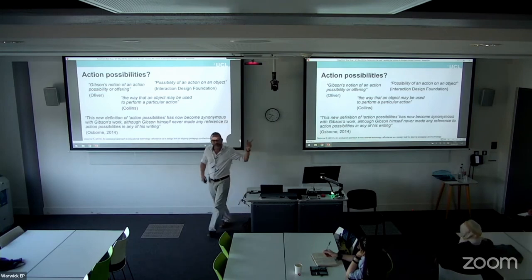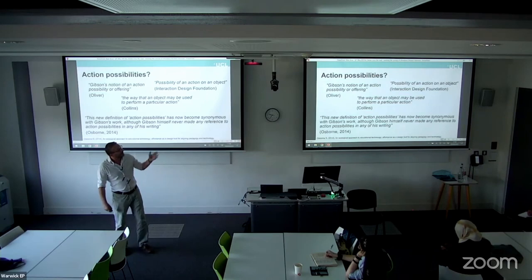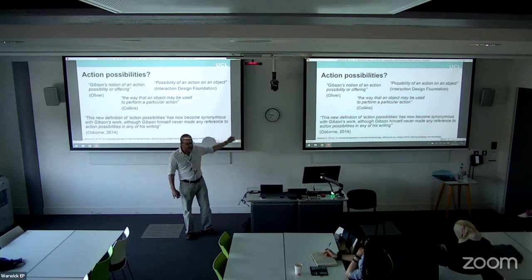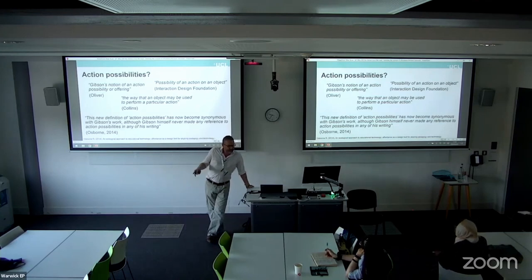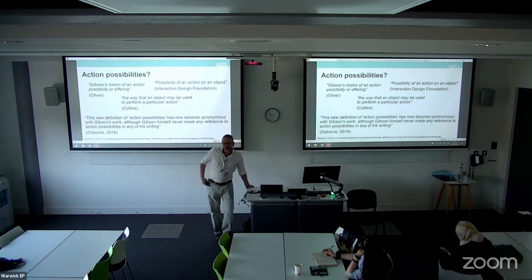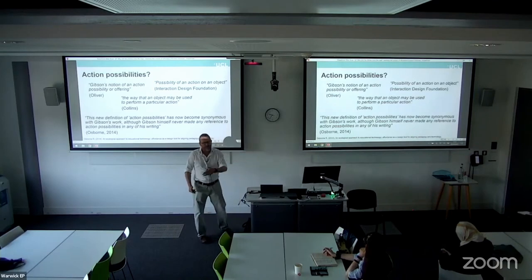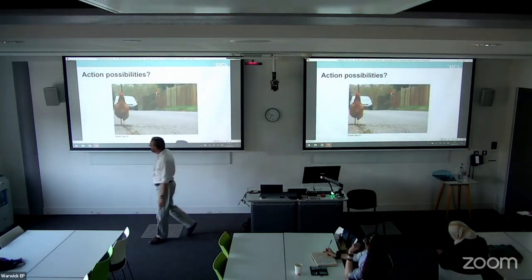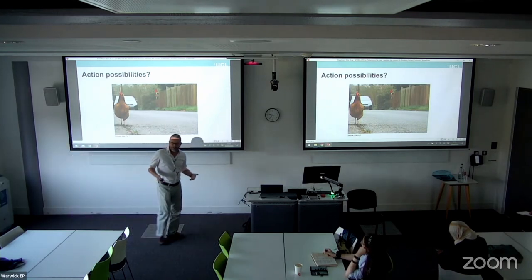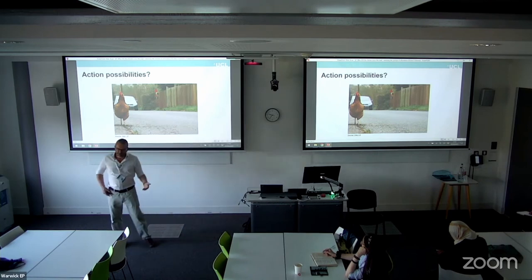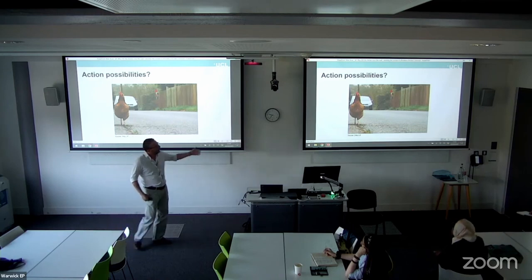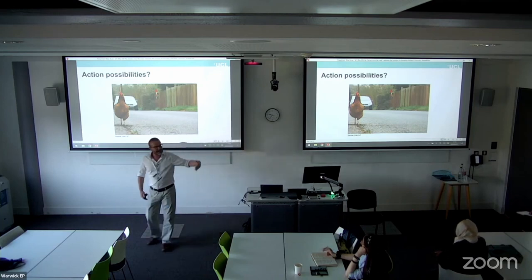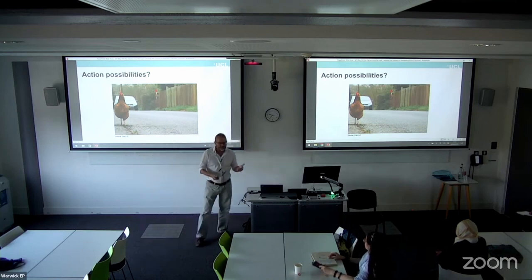Martin Oliver talks about action possibilities in his 2005 paper, and it's in the Interaction Design Foundation and Collins Dictionary as the definition of affordance. Many people seem to think affordance and action possibilities are the same thing — but they're not. I've read pretty much everything Gibson ever wrote, and Gibson never mentions action possibilities; it's not a concept in his work. Take my chicken crossing the road: Gibson talks in ecological terms about being frozen in a blizzard or burnt in a fire. Are these action possibilities? It doesn't make sense in that framing.